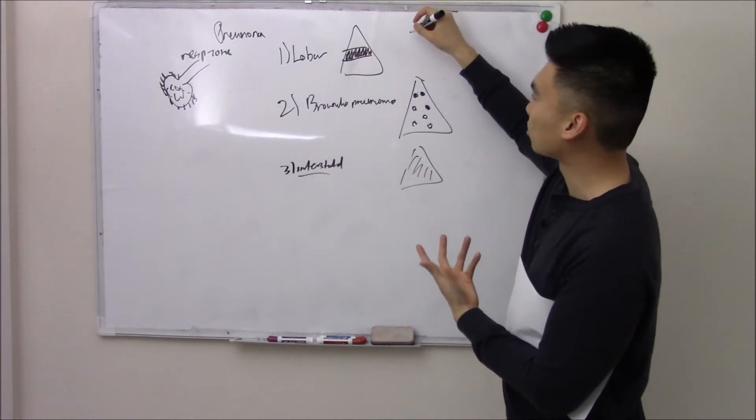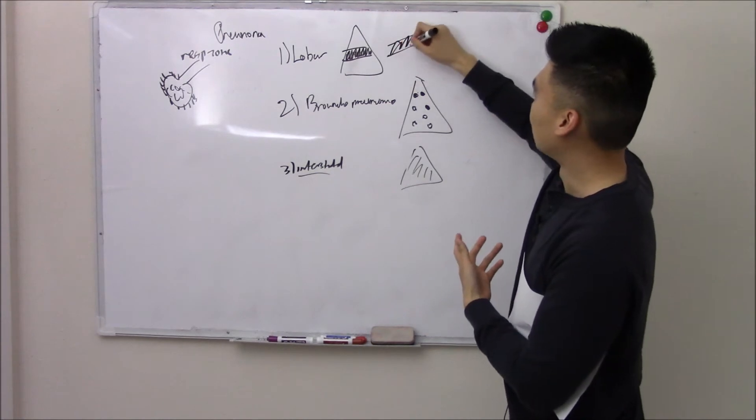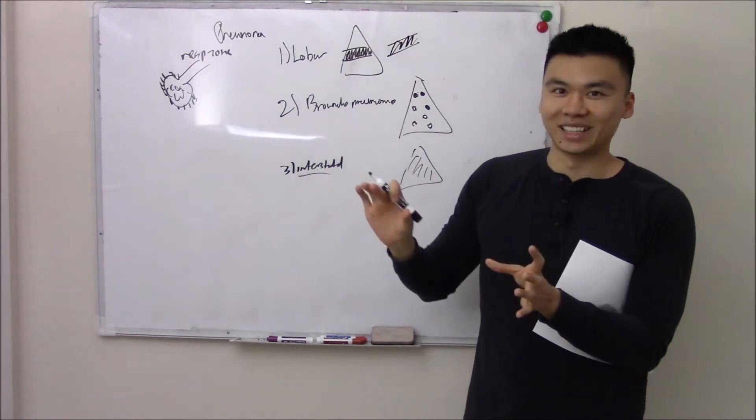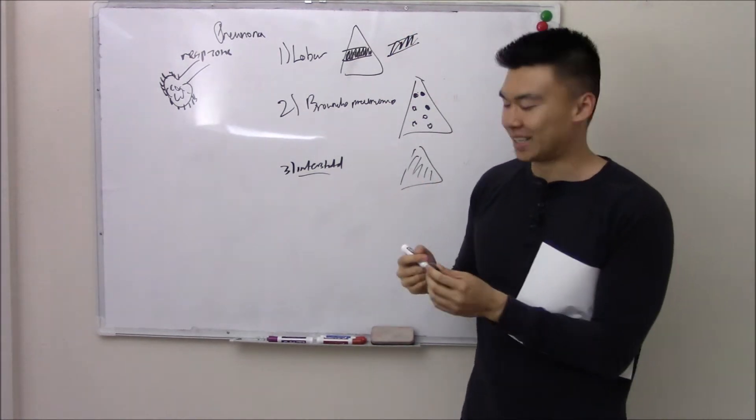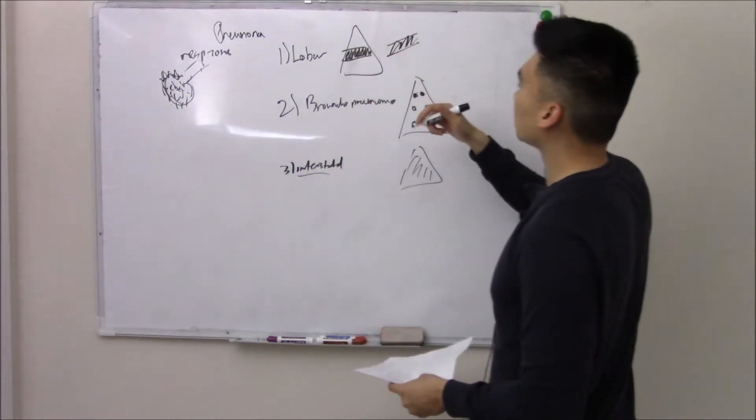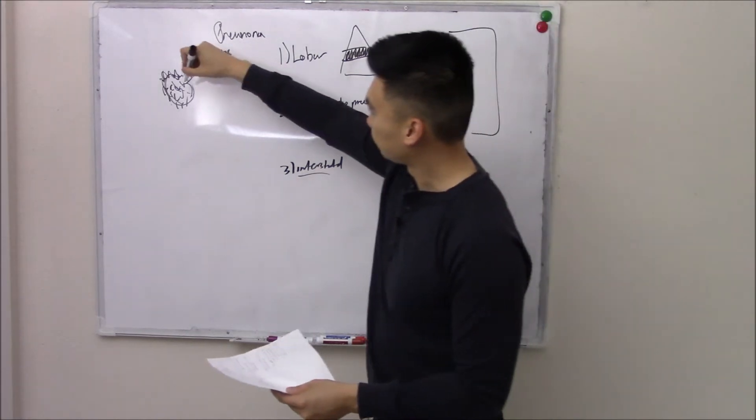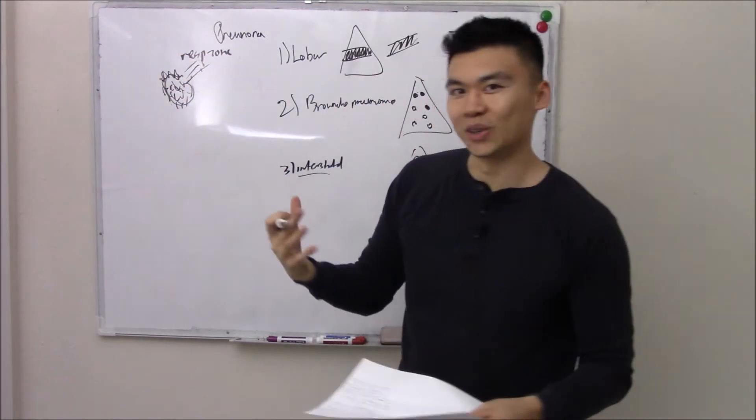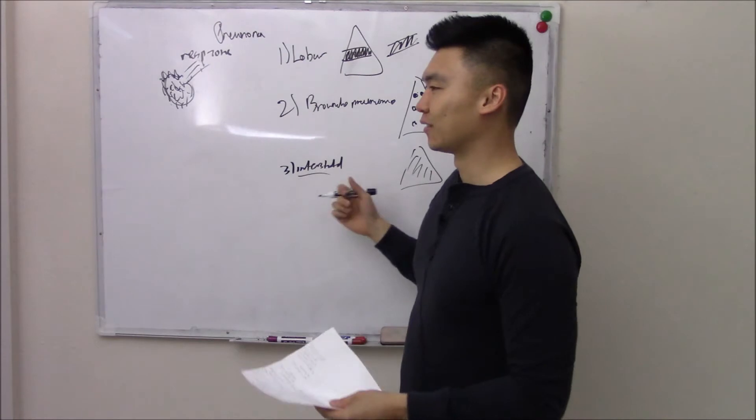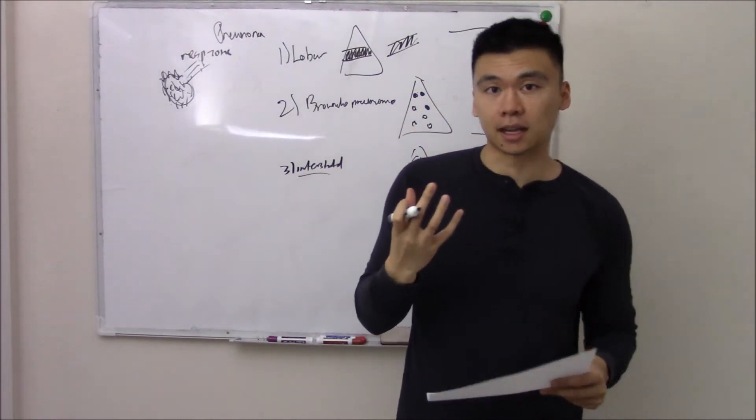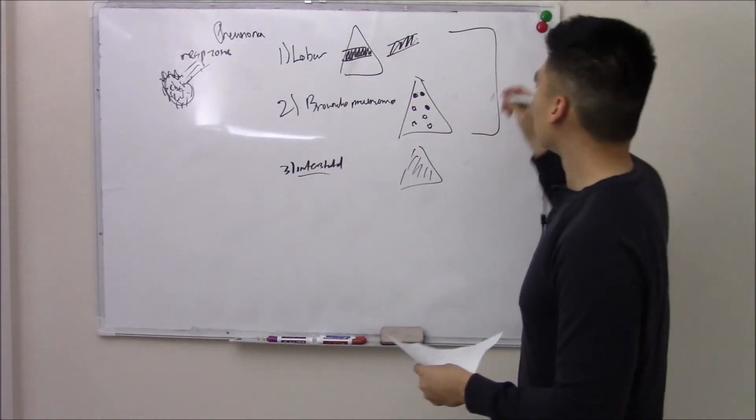If your chest X-ray shows just one lobe, that's completely white, it's lobar pneumonia. Dead giveaway. Now your lobar and bronchopneumonia actually affect inside your actual respiratory zone, instead of outside like interstitial. And that's typical. We call that typical pneumonia.